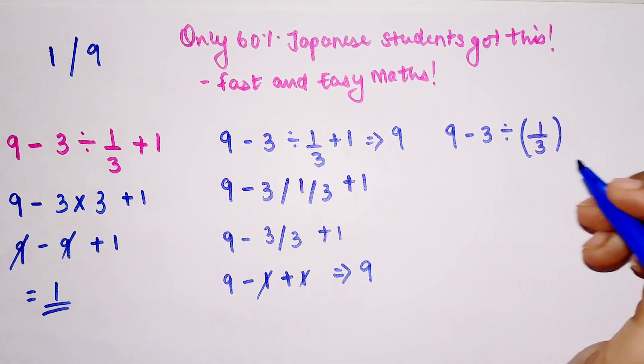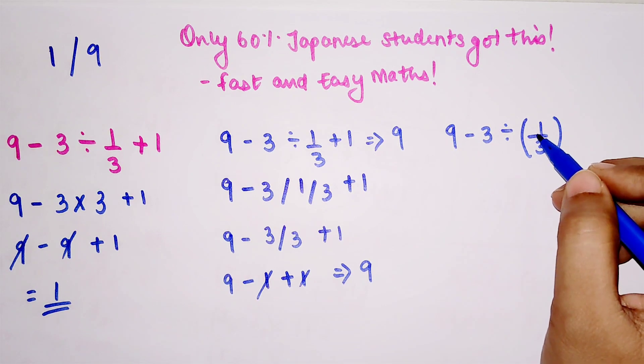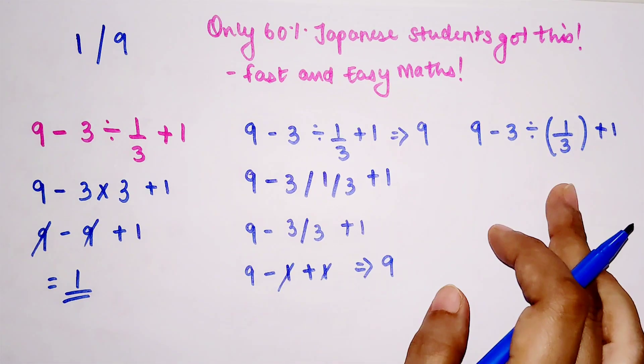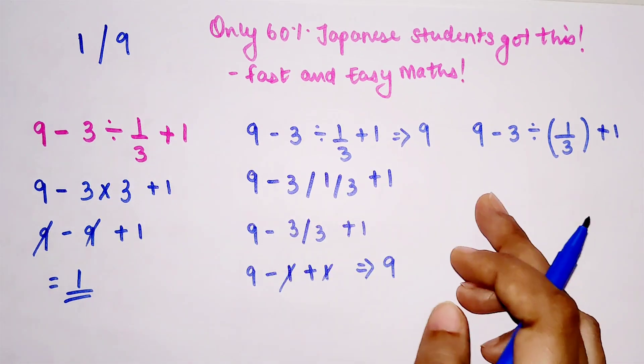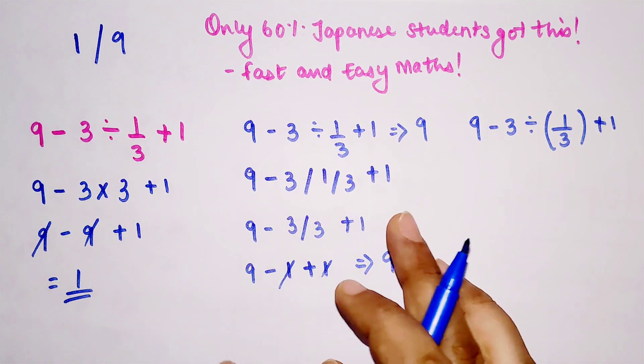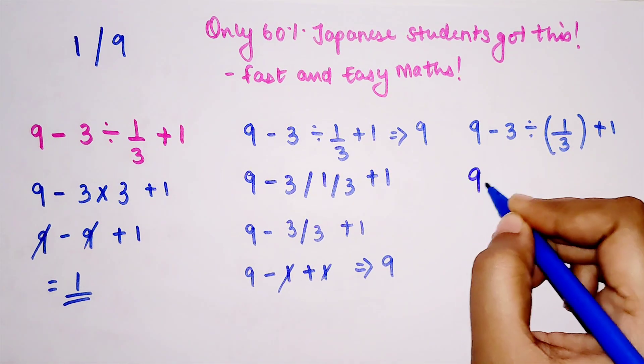When you do a bracket, the calculator knows or Google knows to do this first. Technically, that is the first operation which we also did over here. That is the reason why you're getting two different answers—just because while inputting you did not write this correctly.